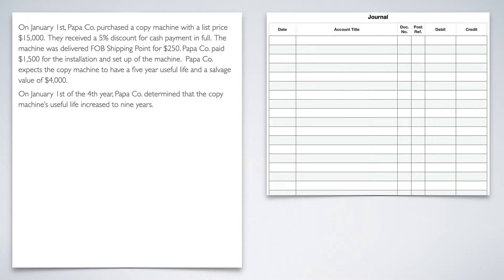Let's talk about what happens when our estimates change. In this example, we're going to look at the same Papa Company example that we were before. But this time, something's going to happen in year four, or January 1st of the fourth year. So we're going to have to do some recalculations.